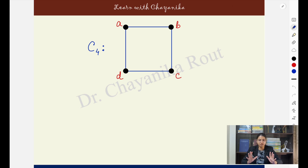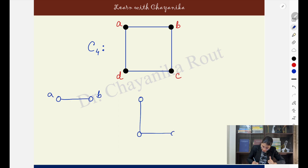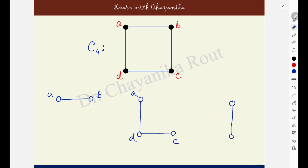For example, if I ask you to decompose C4, I can decompose C4 into subgraphs. Suppose I take one subgraph, then the second subgraph ADC, and then another one BC. This is a decomposition because I have broken down the graph into a list of subgraphs. Edge AB is taken in the first subgraph, edges AD and DC in the second, and edge BC in the third. No edge is drawn in multiple subgraphs — every edge appears exactly once in exactly one subgraph.